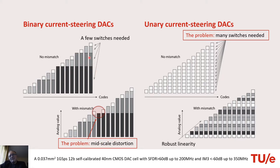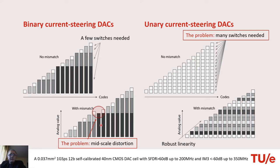The problem with the binary architecture is when mismatch occurs — when these references are not exactly as designed due to manufacturing tolerances. Then this nice staircase becomes very distorted, particularly at mid-scale. We will have large errors, illustrated here by the mid-scale non-monotonicity, for which even though we increase the code by one, the analog output actually decreases. This deteriorates performance very much.